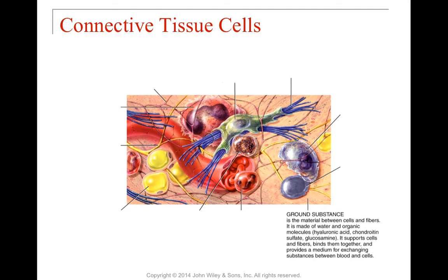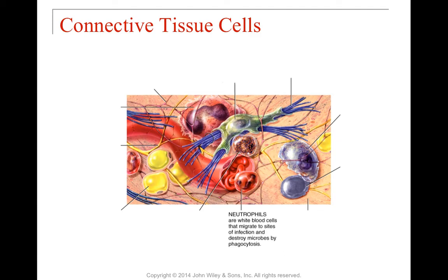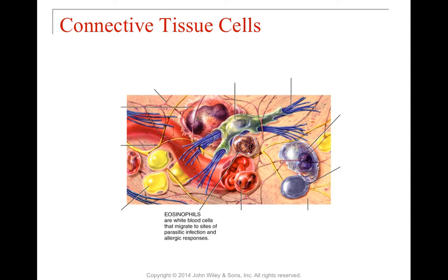Ground substance is the material between all of the cells and all of the fibers, made of multiple different types of extracellular matrix molecules like hyaluronic acid and glucosamine. It supports cells and fibers and binds them, and acts as an exchange point for substances between blood cells and the cells themselves. Neutrophils are white blood cells that cruise through the bloodstream until they reach the site of infection, where they migrate out and destroy microbes by phagocytosis — reaching out with pseudopods, engulfing the microbe, and digesting it. Eosinophils are another type of white blood cell, specialized to migrate to sites of parasitic infection and to mitigate allergic responses.